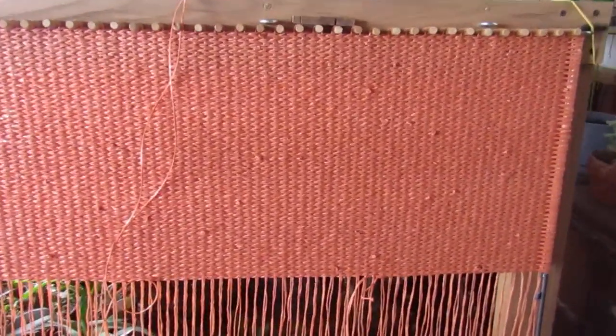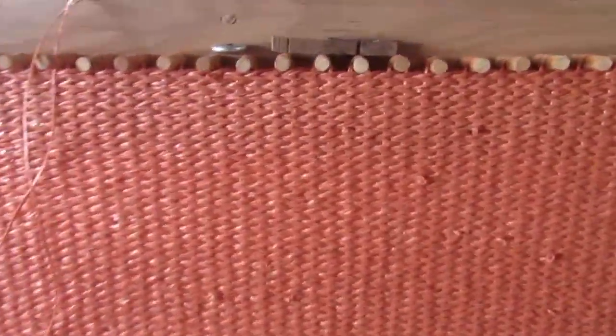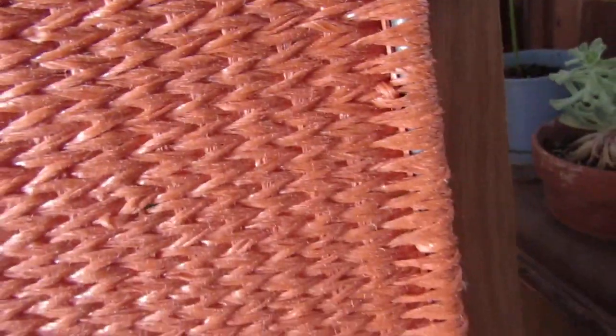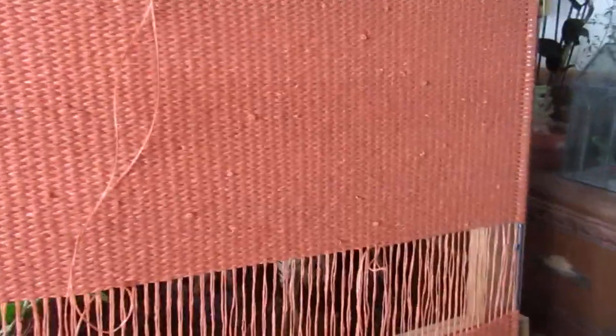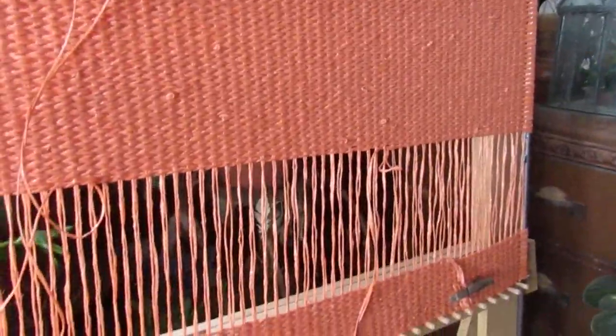This is my new rug that I'm making out of baling twine. It is three feet by four feet. Last spring I made a big one that was three feet by four feet, and that's outside of our front door.